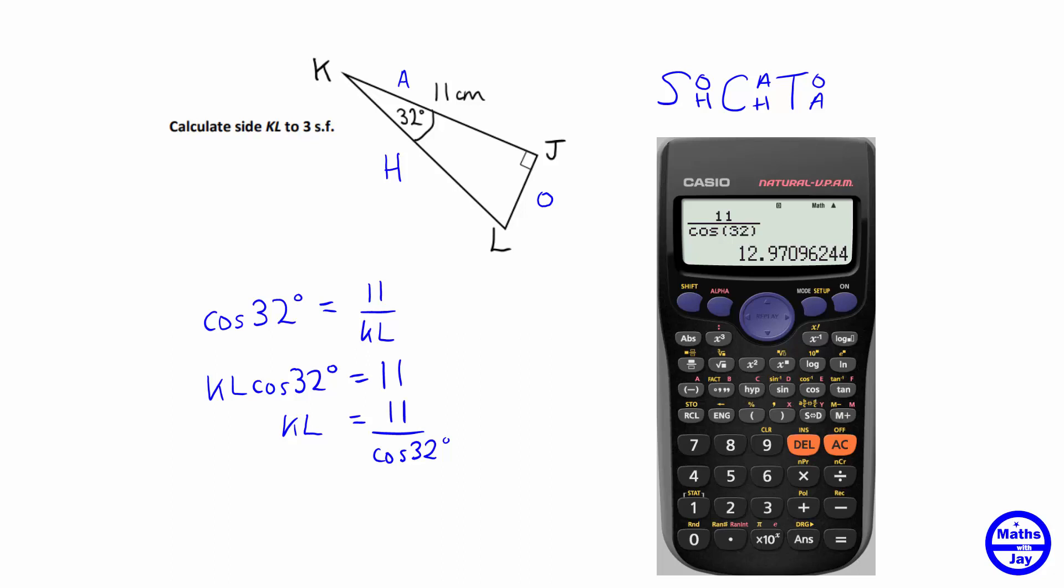You could actually get the calculator to do that for you if you like. So we want to fix the number of decimal places to one, because we want the number to three significant figures and it's going to have one digit after the decimal point, so that's one, and that gives us the answer that we want so thirteen point zero.